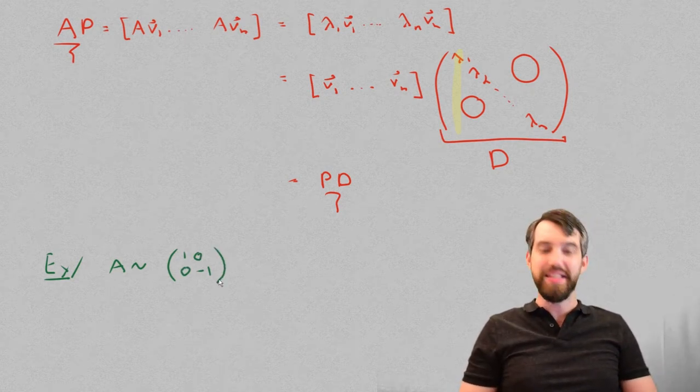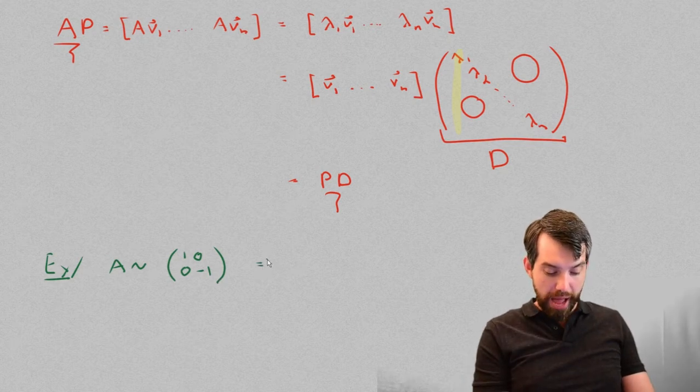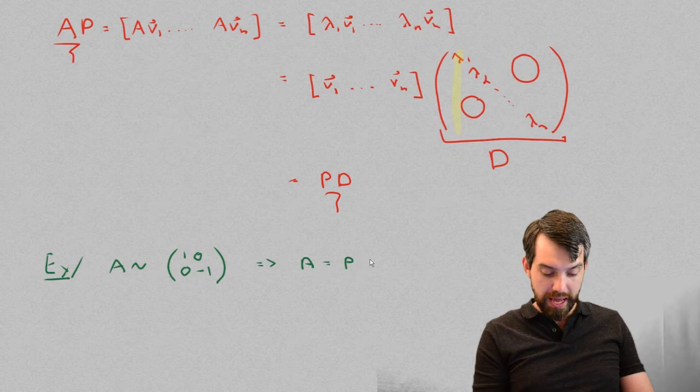Indeed, there's some P that has this relation. In other words, I'm claiming that the A matrix is going to be equal to the P times that diagonal matrix I just wrote down, times P inverse.